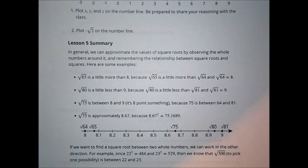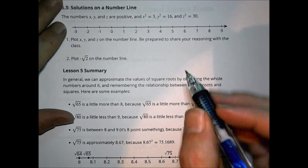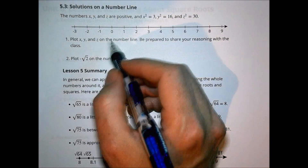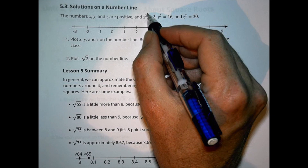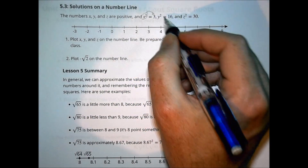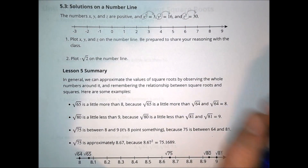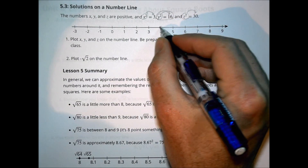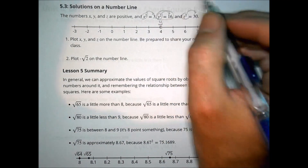Let's move on to 5.3. The numbers x, y, and z are positive: x squared equals 3, y squared equals 16, and z squared equals 30. Plot x, y, and z on the number line. The easiest one is y squared equals 16, because we know 4 times 4 equals 16, so y equals 4.